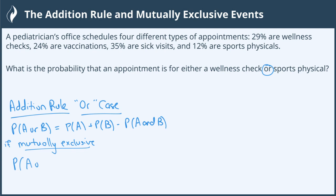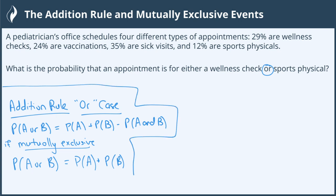If events are mutually exclusive and cannot happen at the same time, then the probability of A and B occurring is zero, which means the addition rule gets even simpler: it's just P(A) plus P(B). There's nothing to subtract because there is no intersection.